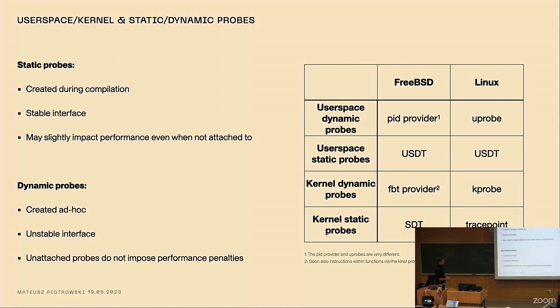Then we have the dynamic probes. They are created ad hoc. They offer unstable interface because it's usually just the signature of a function inside the kernel or the user space. So if someone changes the signature, your script is going to break. The benefit is that you can attach to pretty much any part of the system, any function. And also, there is no performance penalty for having this possibility of attaching.